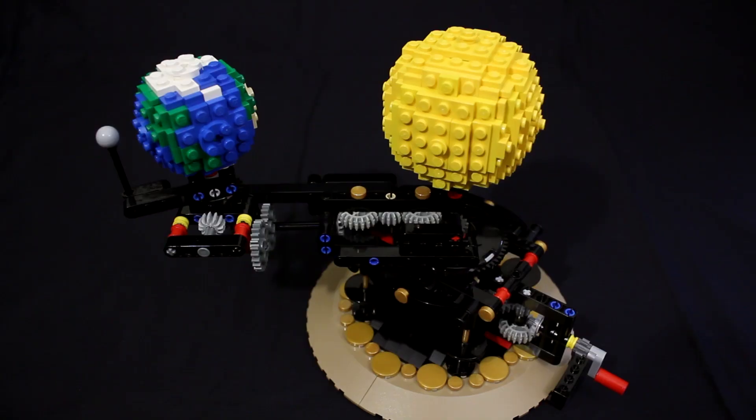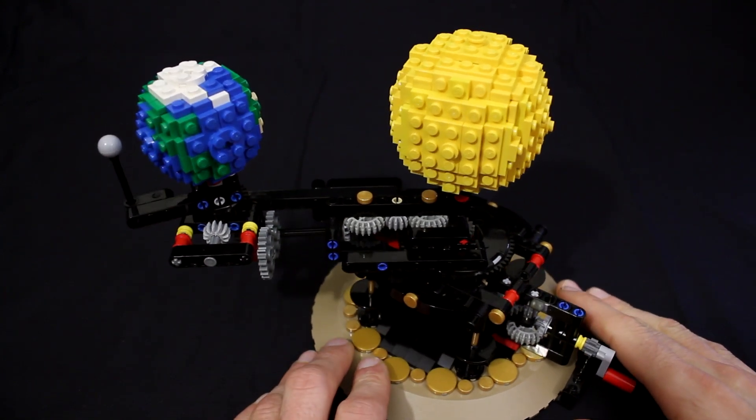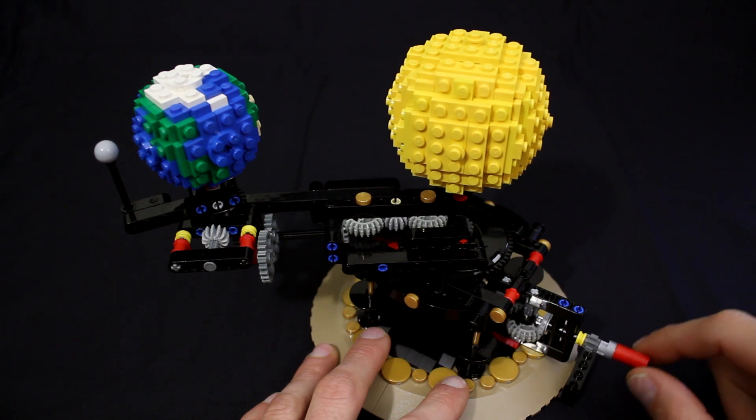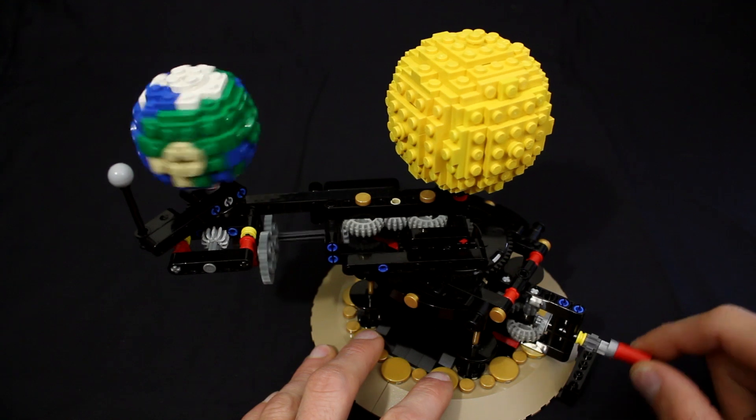Before I walk you through the drive system and explain how it all works, let's just take a look at how this model stacks up to real life. Every turn of the crank represents one day, and as you can see, with every full rotation, the earth also makes one full rotation.